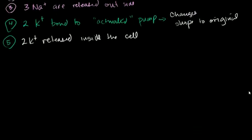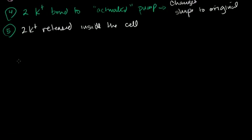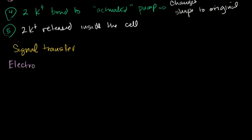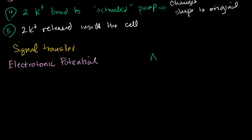There are two types of ways that a potential can travel — two types of signal transfer. The first one is electrotonic. It sounds very fancy, but you'll see it's a very simple idea. The other one is an action potential. They both have their own positives and negatives in terms of being able to transmit a signal.